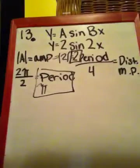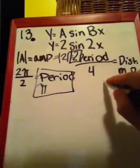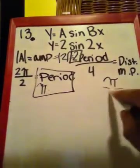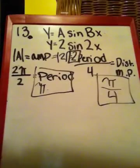And we also need to find the five major points between each in our graph. So, to find the distance between the major points, we will always take our period divided by 4. So in this case, it will be π, which is our period, divided by 4. And we'll have π/4 in between each.